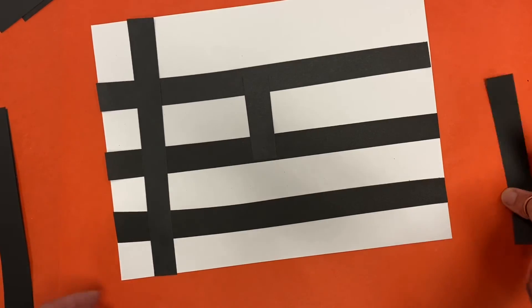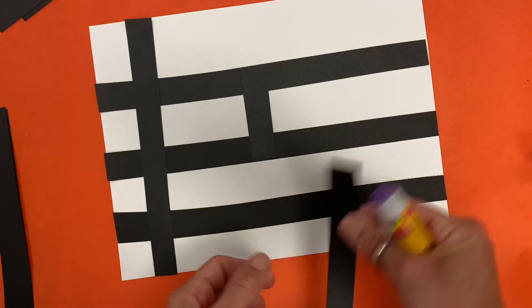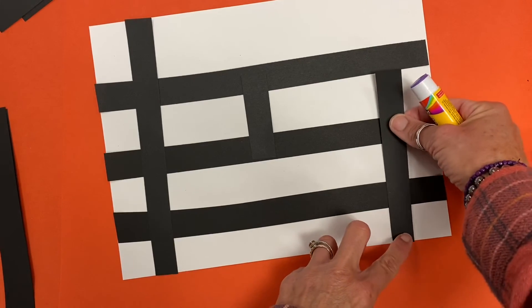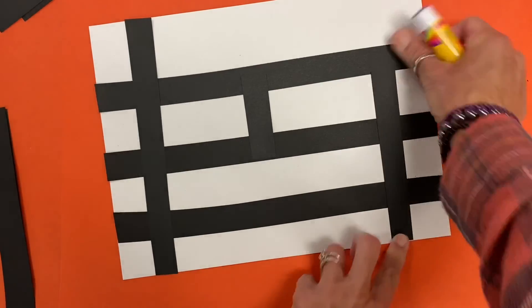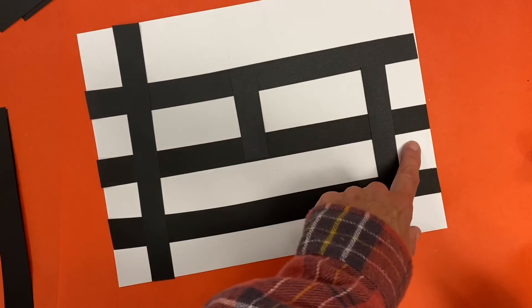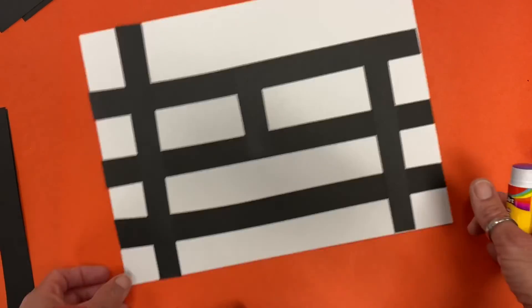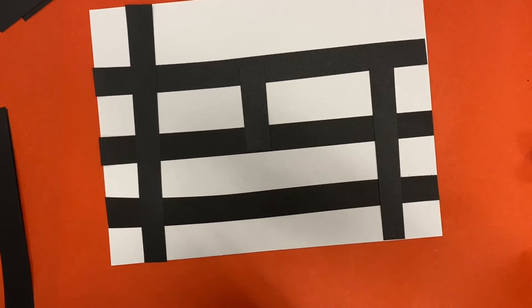And you can just add your strips however many you want. And you can start to see what is happening now with the spaces in between the strips. I'm now starting to get some rectangles and some squares inside of my vertical and my horizontal lines. So have some fun guys. Those of you at home send me a picture when you're done.